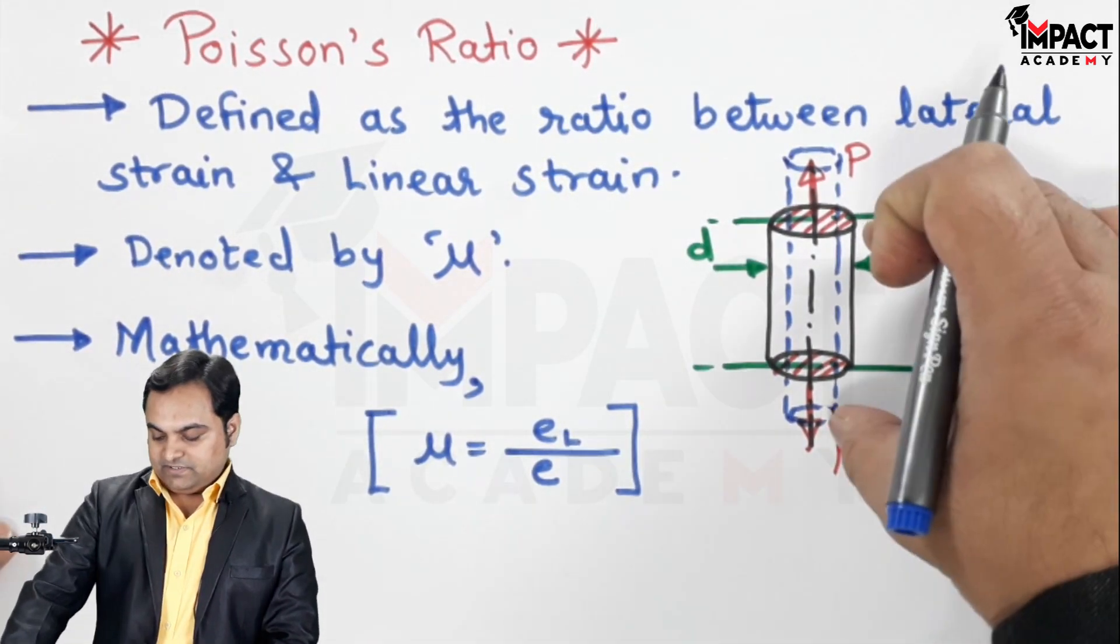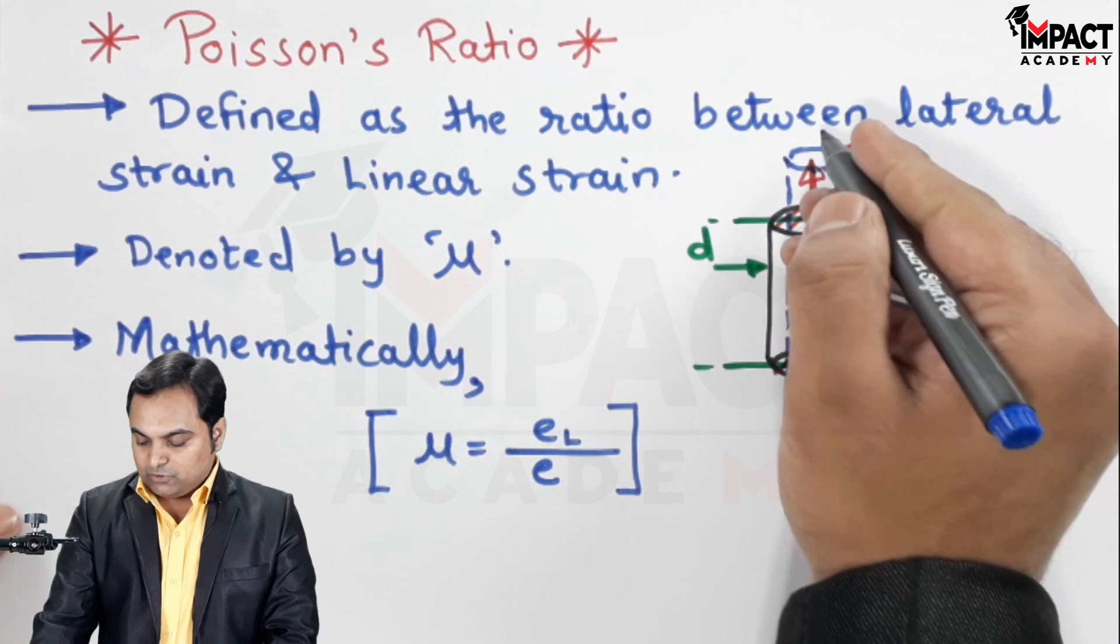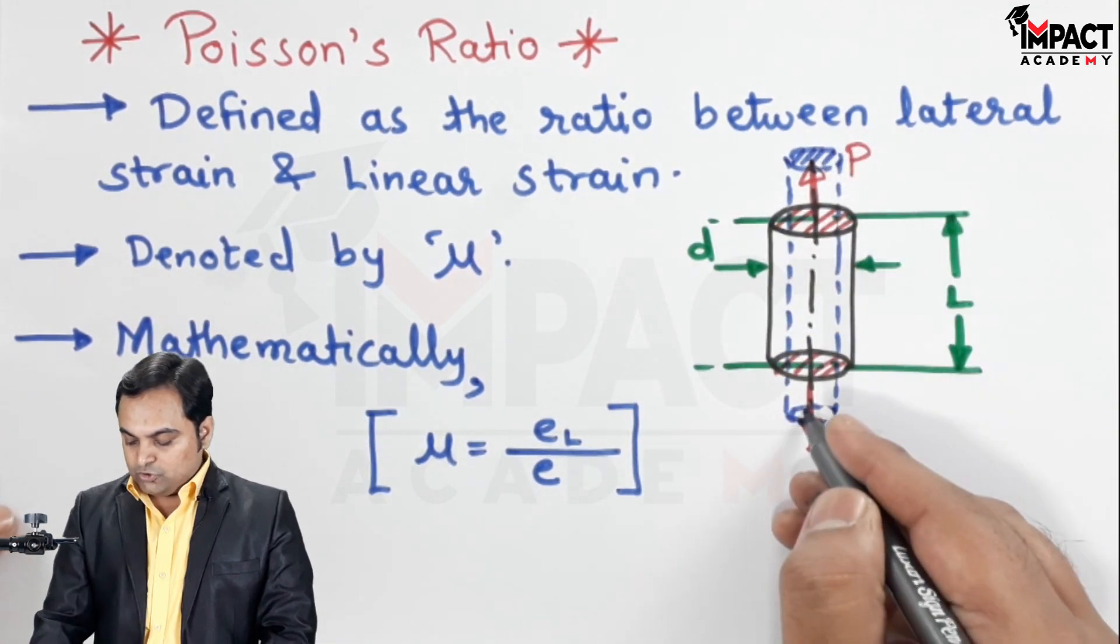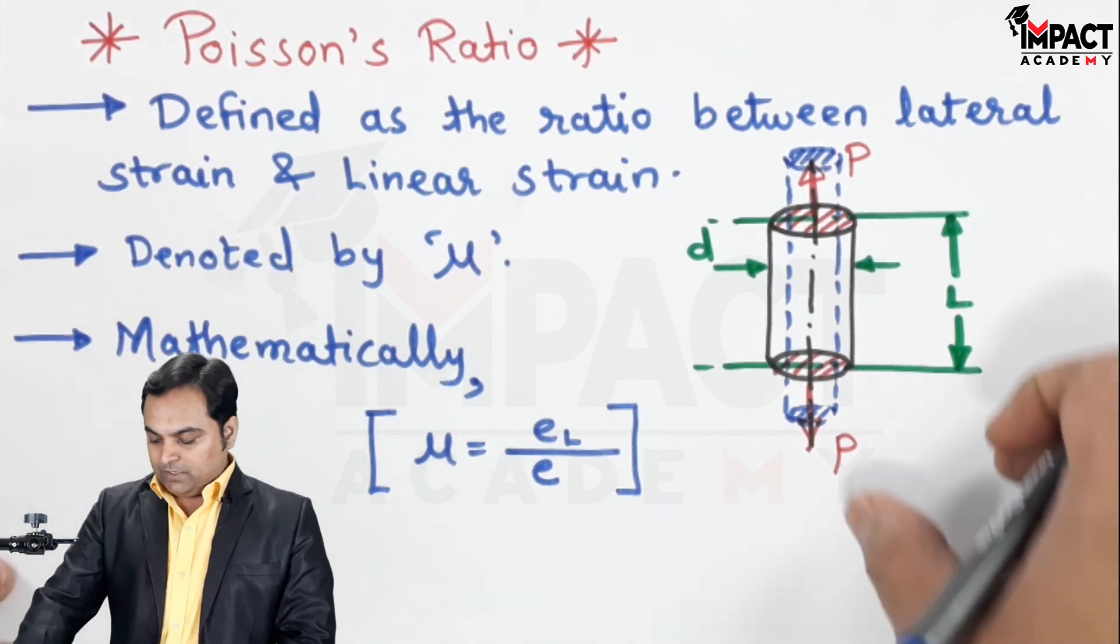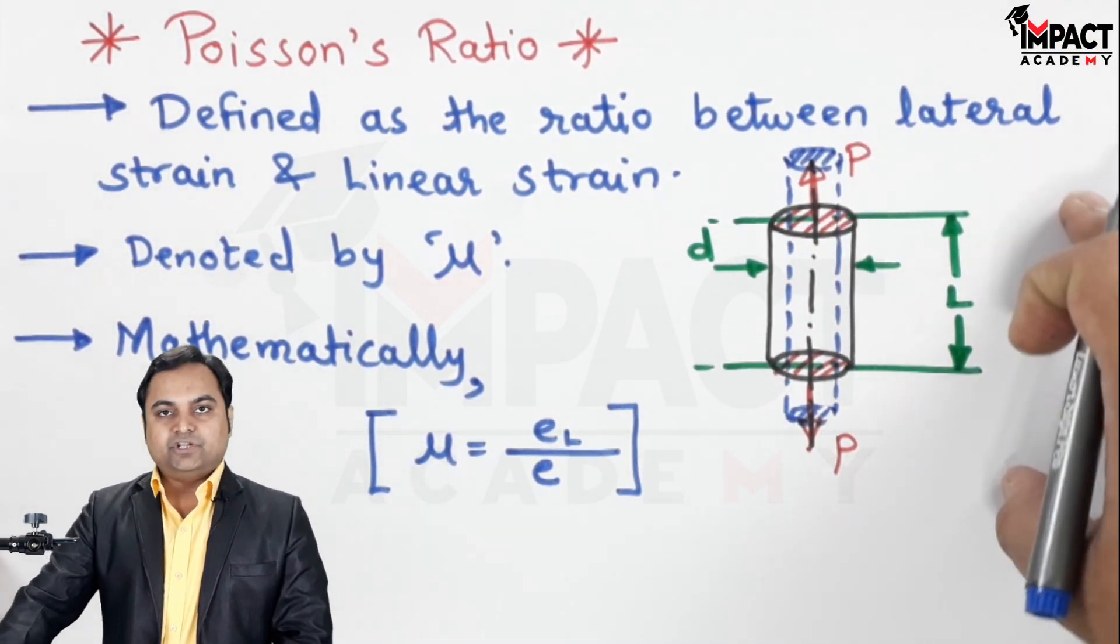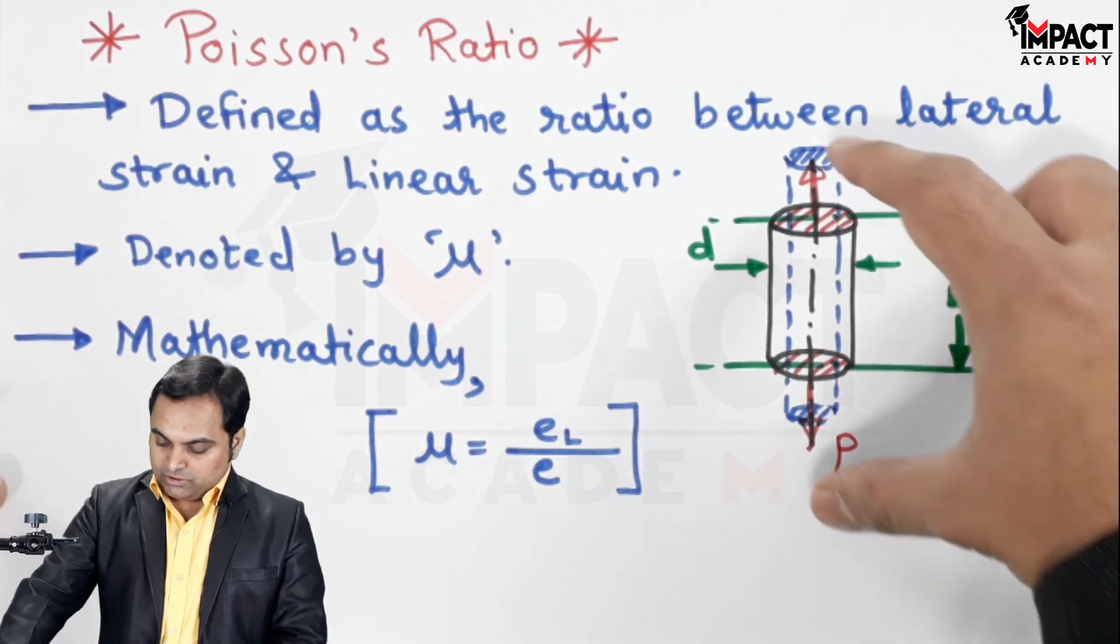We can see that the length has increased whereas the diameter of the rod has decreased. So in order to understand linear and lateral strain, see the load is parallel to which dimension - this is the simplest approach.